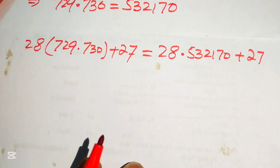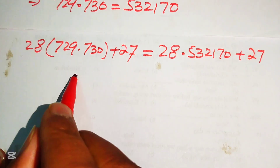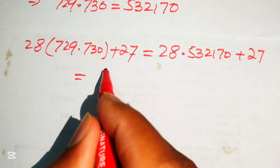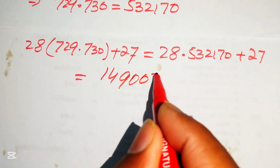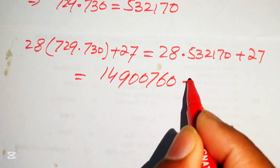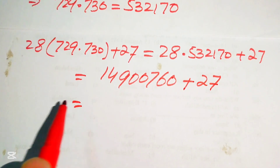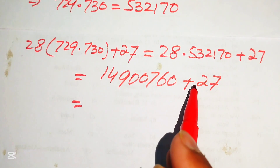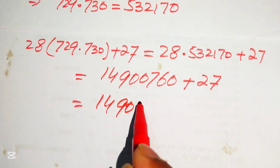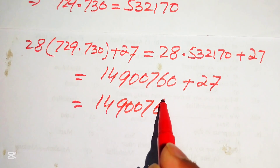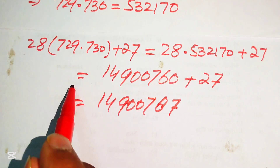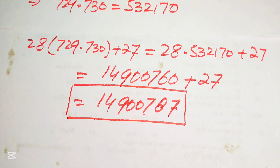Now our expression is 28 times 532170 plus 27. Using traditional multiplication, 28 times 532170 equals 14900760. Adding 27 gives 14900787. This is our final answer to the given question. Thank you so much for watching this video, please subscribe to my channel for more exciting videos.